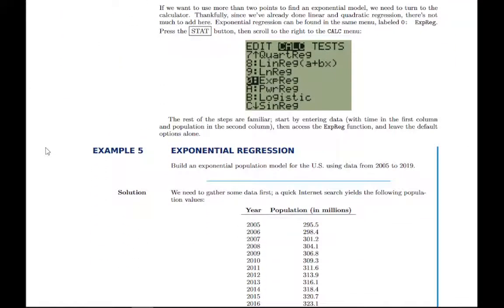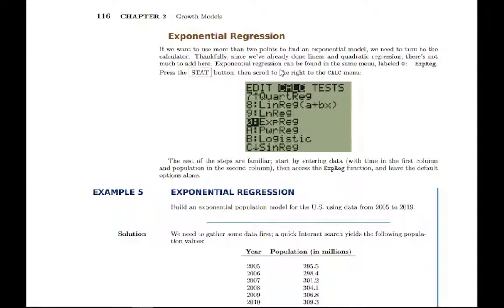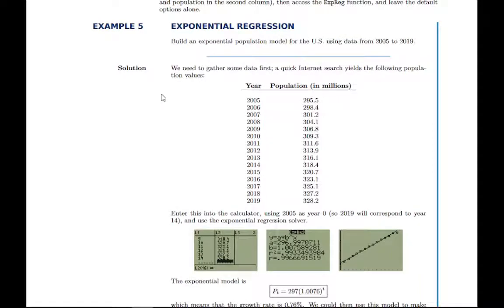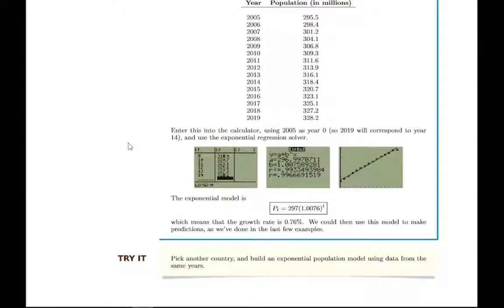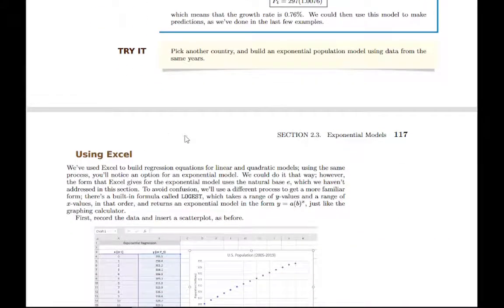We can also do exponential regression. So manually, we can build an exponential model if we have two points. If we have more than two points and we want to use all of them, rather than just picking two points to build our model, we can use all of them doing exponential regression. It's in the same menu with linear regression and quadratic regression. You just scroll down further to exponential regression. You can follow this example to see how that works. Nothing really new. It's the same process.